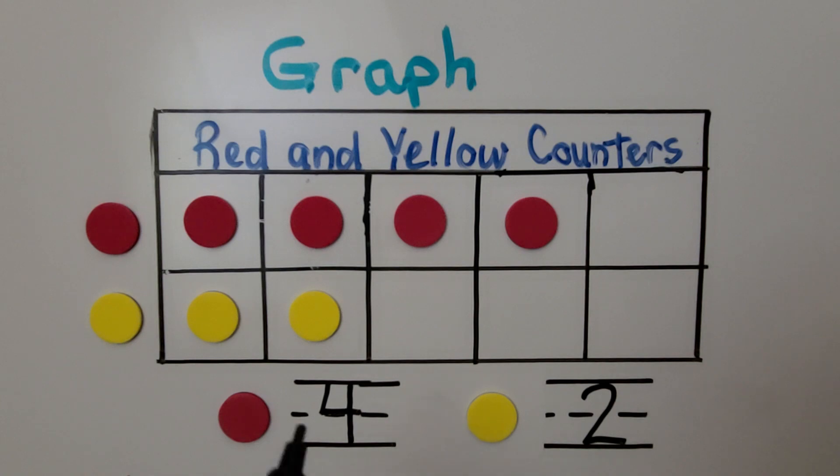So, there are four red, two yellow, and we can circle the category that shows more. If there's more red, we're going to circle the red counter.